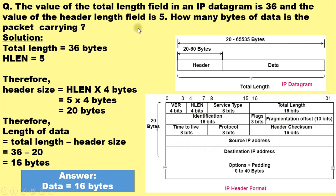Now here in this case the HLEN field value is given as 5. It means that the header size or header length is 5 multiplied by 4 bytes, that is 20 bytes.